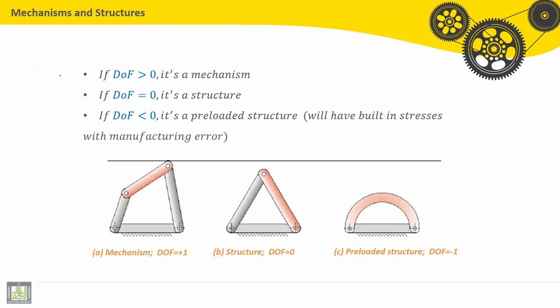If degree of freedom is positive, it is called a mechanism. If it is equal to zero, it is called a structure. If degree of freedom is negative, it's a preloaded structure that will have built-in stresses with manufacturing errors. The first example is a mechanism with degree of freedom equals 1. So this system can be driven with one rotation, for example, from here.